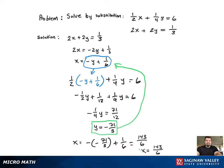And there you have it. So our ordered pair solution is going to be 143 over 6, comma, negative 71 over 3.